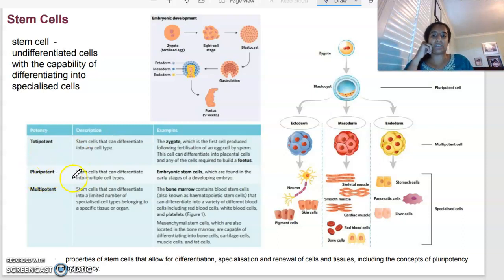Pluripotent cells, however, they can differentiate into multiple stem cell types. So these are what we call our embryonic stem cells, which are found in the early stages of a developing embryo. And then multipotent can differentiate into different types of cells, but not as many. So they're a little bit more limited to specific tissues or organs. Things like the bone marrow that contains blood stem cells that can differentiate into different blood cells. So your red blood cells, your white blood cells, your platelets.